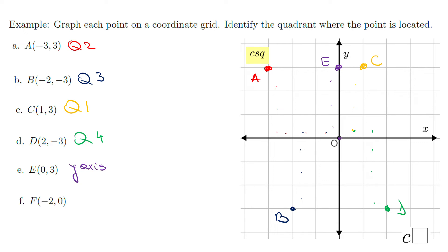And the last one I have here is point F at negative two and zero. From the origin, I'm going to move two left because it's negative two, and stay there. This is point F, which is on the x-axis.